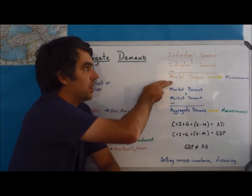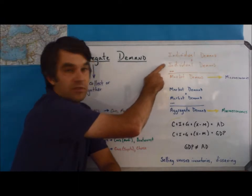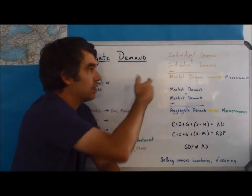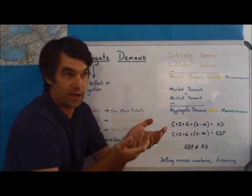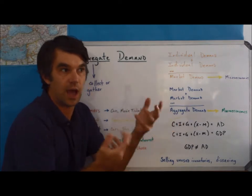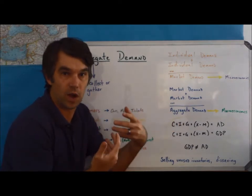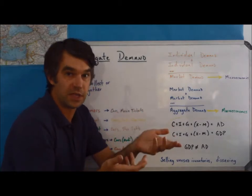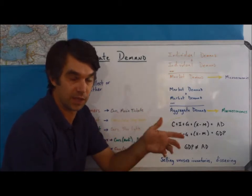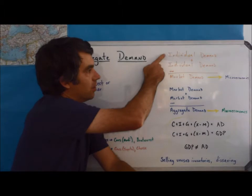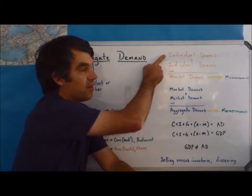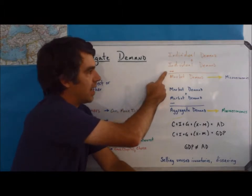Market demand is composed of all the different individuals inside of the market. So at a certain price, at a price of ten dollars, how many haircuts does Mr. McLaughlin want? At a price of fifteen dollars, how many haircuts does Mr. McLaughlin want? It's taking all the individuals inside of a market and adding them together.